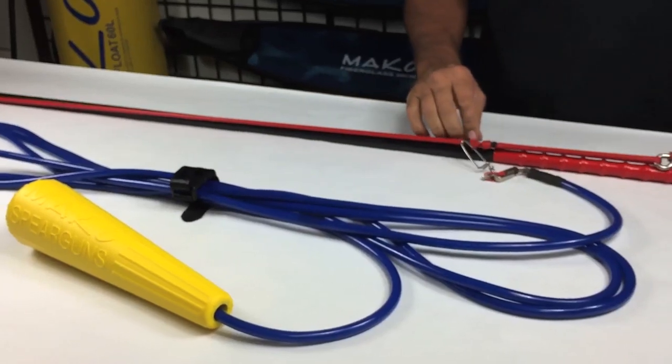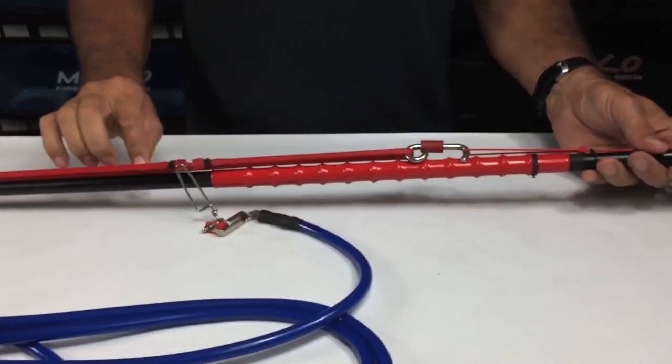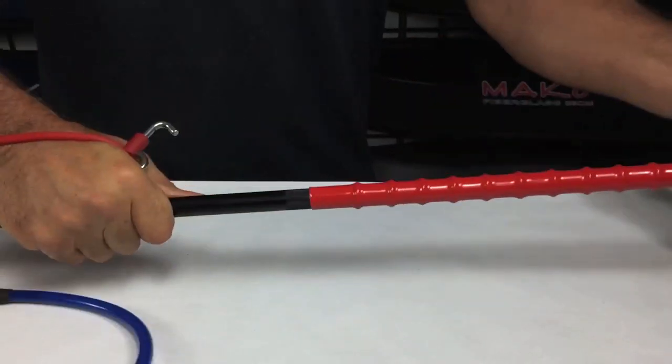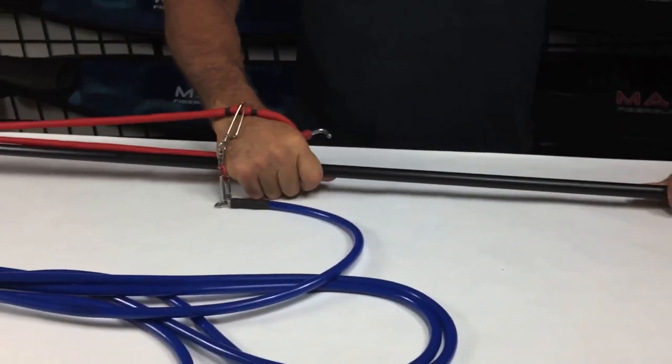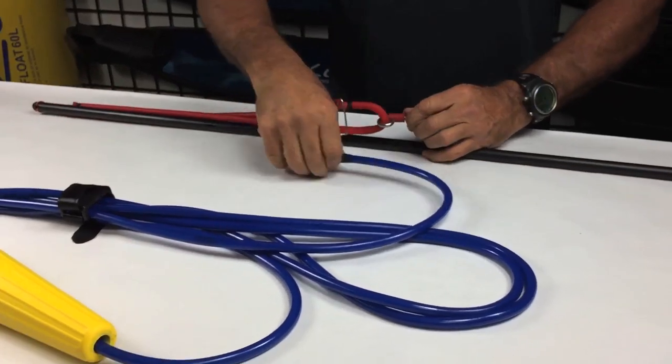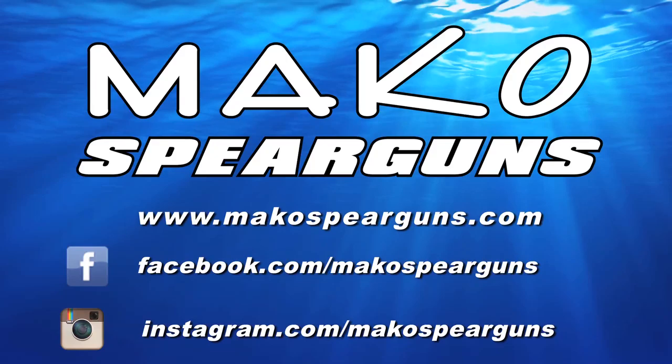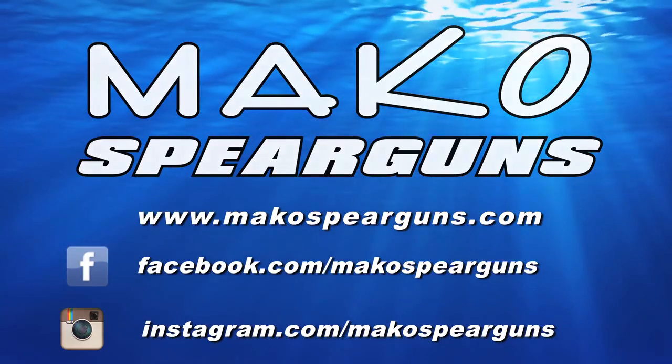Thanks guys for taking time to watch this video. At Mako Spear Guns, we use the exact same factories as the more expensive brands, and we ensure the same high quality. But because we sell direct to you instead of through dive shops, our prices are much less. Same factories, same high quality, no dive shop markup. Thanks for your support. Dive safe.